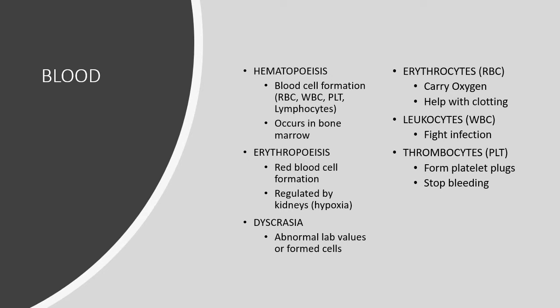Hematopoiesis is the term for blood cell formation, and that includes red blood cells, white blood cells, platelets, and lymphocytes. This occurs in the bone marrow. We have pluripotent stem cells in the bone marrow that can receive messages from hormones within the body telling the bone marrow what to make. During times of stress or infection, it makes more white blood cells, and during anemia or blood loss or decreased oxygenation, it makes more red blood cells.